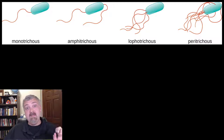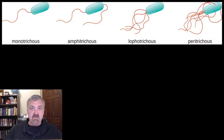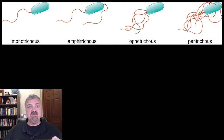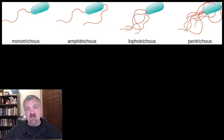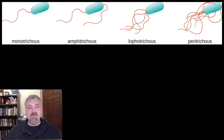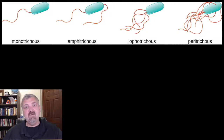Atrichous: no flagella. Monotrichous: one flagella on one pole, one end. Amphitrichous: flagella on both ends. Lophotrichous: a tuft of flagella on one end. And if you have flagella all over, that's peritrichous. Have a wonderful day, be blessed, bye-bye!